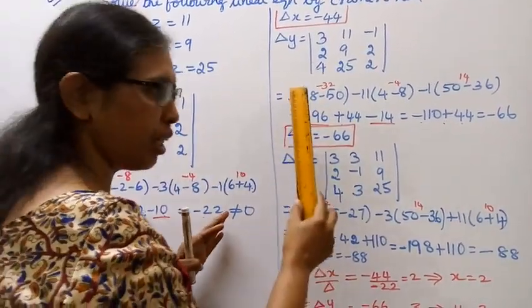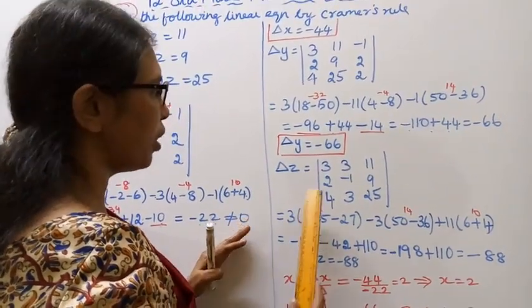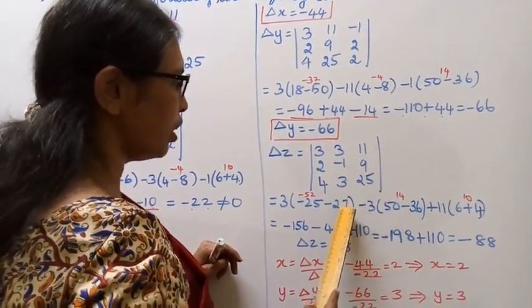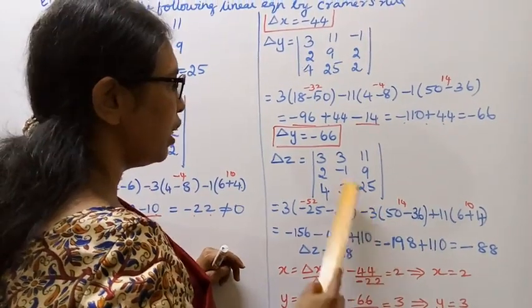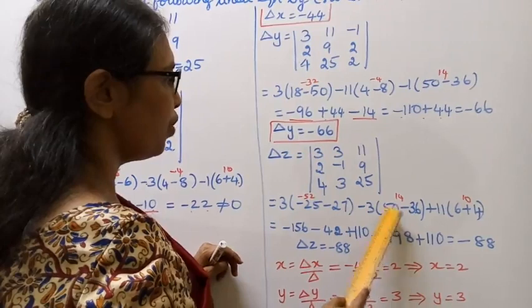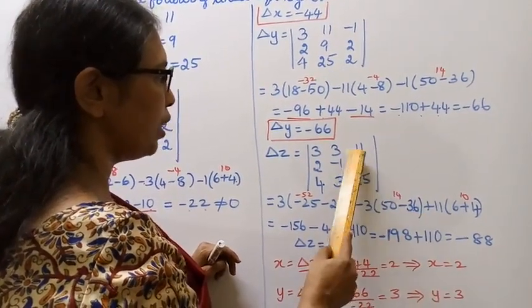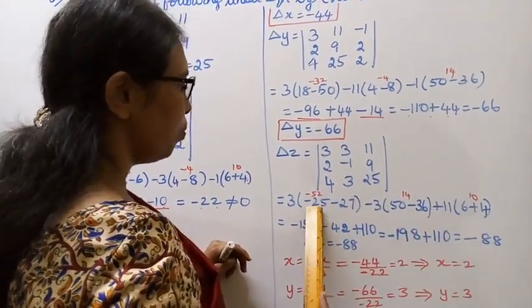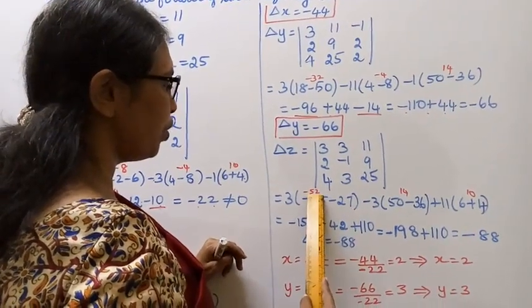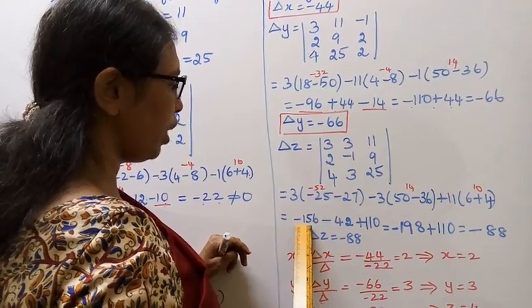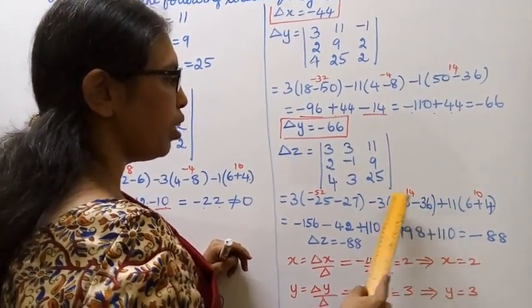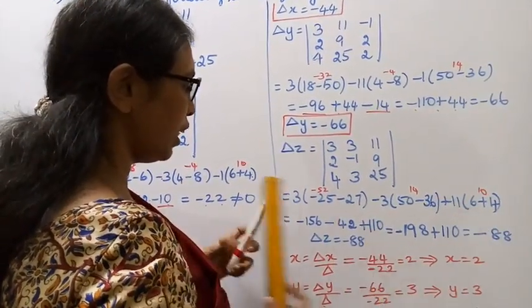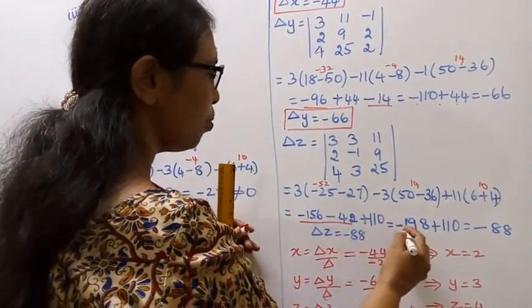3 minus 1 into 25 minus 25, minus 3 times (9 times 27), minus 3 times (2 into 25 is 50 minus 4 nines are 36) plus 11 times (2 threes are 6 minus 4 into minus 1), minus 4, plus 4. Minus 25 minus 27 minus 52, minus 52 into 3 minus 156. 50 minus 36 is 14, 14 into minus 3 minus 42. 6 plus 4 is 10, 10 into 11 is 110. Minus 156 minus 42 minus 198 plus 110, that is equal to minus 88. Delta z equal to minus 88.